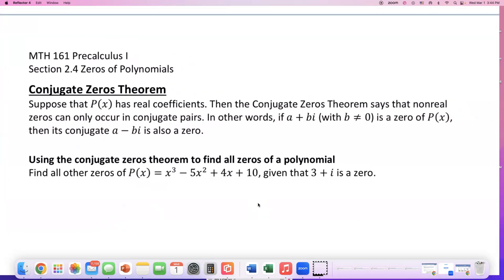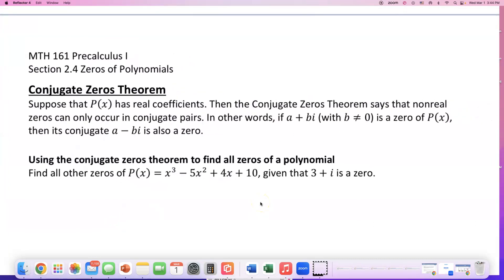Let's talk about conjugate zeros theorem. Suppose that P(x) has real coefficients. Then the conjugate zeros theorem says that non-real zeros occur only in conjugate pairs.